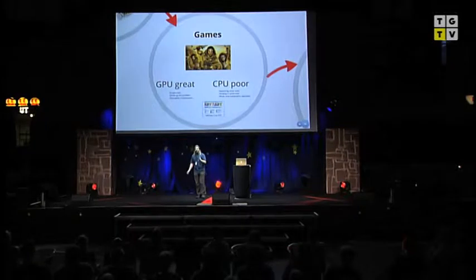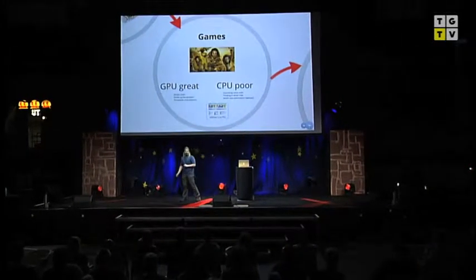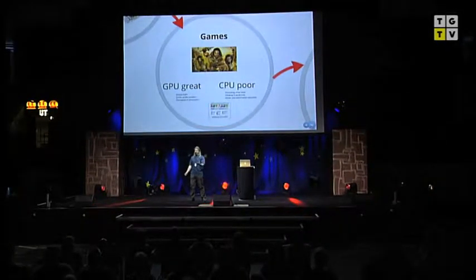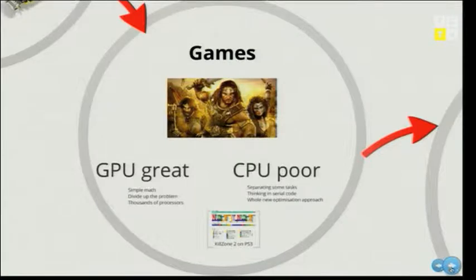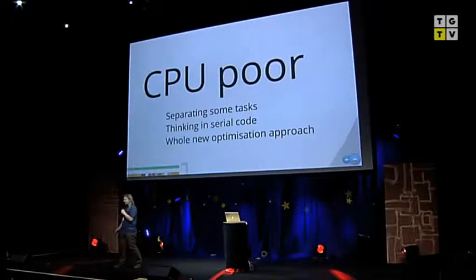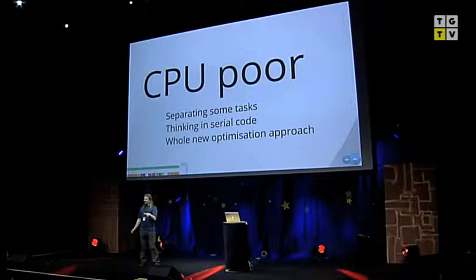Games have always pushed technology. The reason why we have multi-core GPUs is because of you guys and your ability to spend money on making your games look nicer. We've got pretty good at parallelizing GPUs, and games use the GPU more than anything else. It's designed for games, and we work the ass out of that GPU. It's simple maths — it divides up a problem and has thousands of processes.